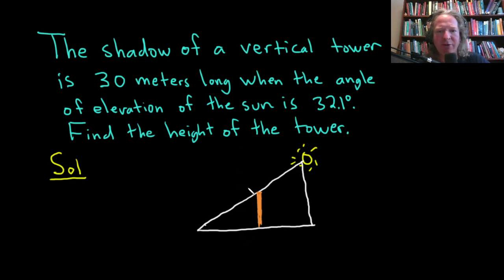And the shadow of the vertical tower is 30 meters long. So the shadow, I'm going to draw that in red, will be down here because the sun is shining on the tower. And the tower casts a shadow on the ground, which is indicated here in red. And we're told that that shadow is 30 meters long. So this is 30.